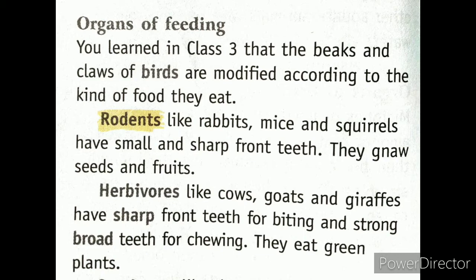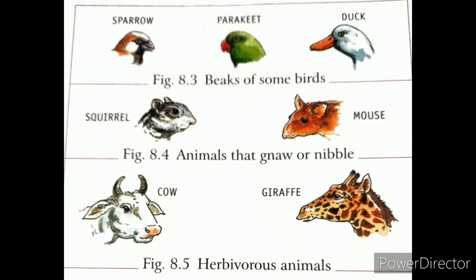If there is an insect-eating bird, their beak will be different. Fruit-eating birds will also have a different beak. Now, rodents - like rabbits, mice, and squirrels - have small, sharp front teeth. They use these teeth to gnaw seeds and fruits, and they can grow continuously.